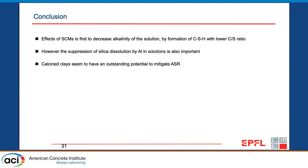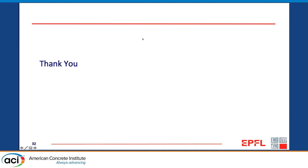In conclusion, what we've seen is that SCMs suppress alkali-silica reaction first and foremost by lowering alkalinity, by forming C-S-H with a lower calcium-to-silicon ratio that absorbs more alkali. However, the suppression of silica dissolution by aluminum in solution is also important. For this reason, calcined clays — which have a very good capacity to lower CO₂ emissions — also have outstanding potential to mitigate ASR. We have samples from experiments now about eight years old, exposed in pore solution, which are still performing very well.